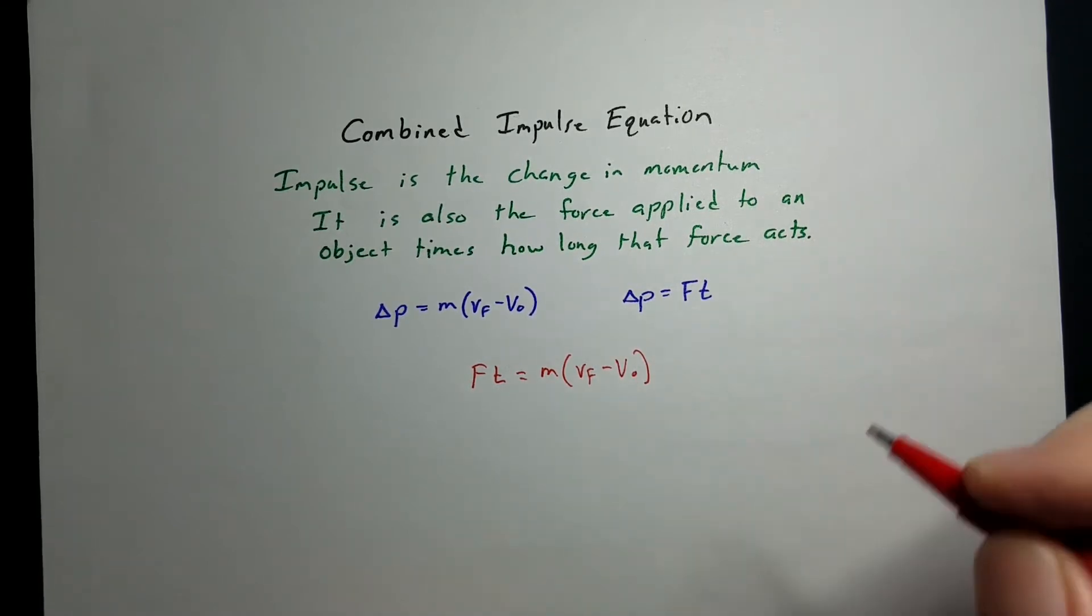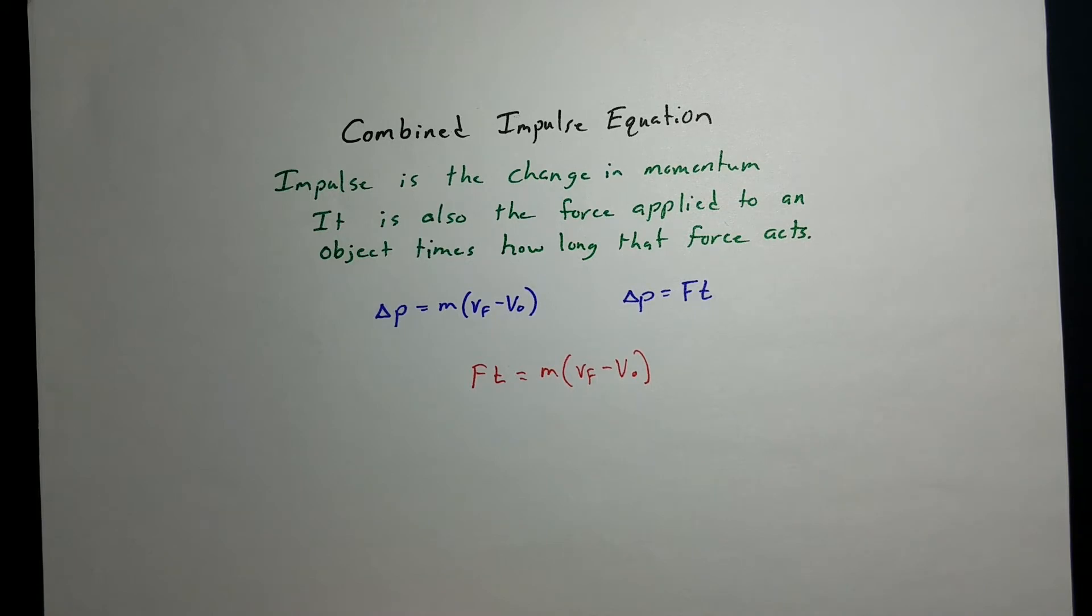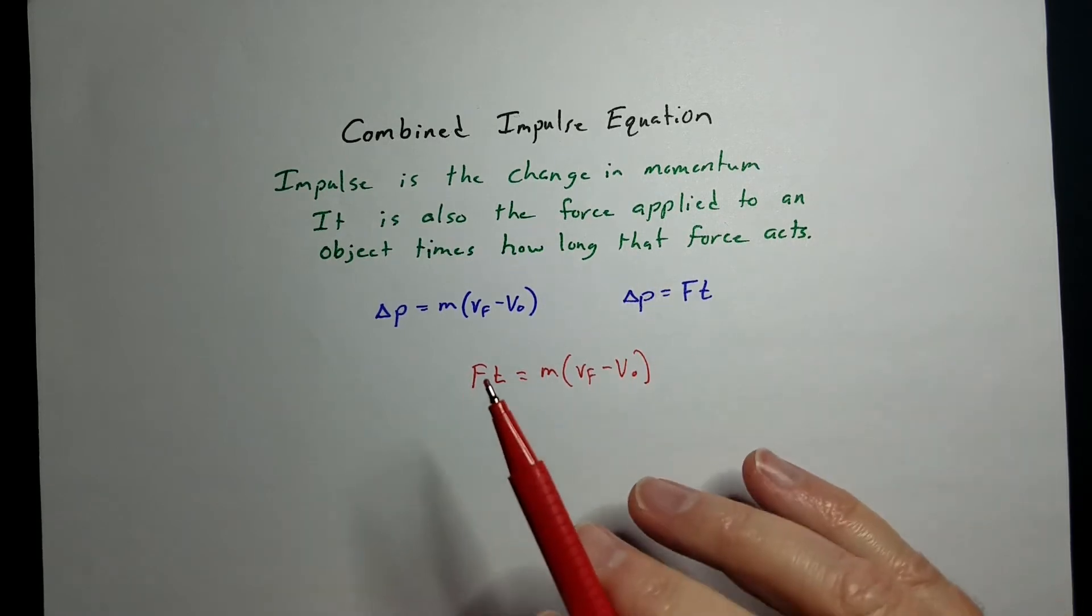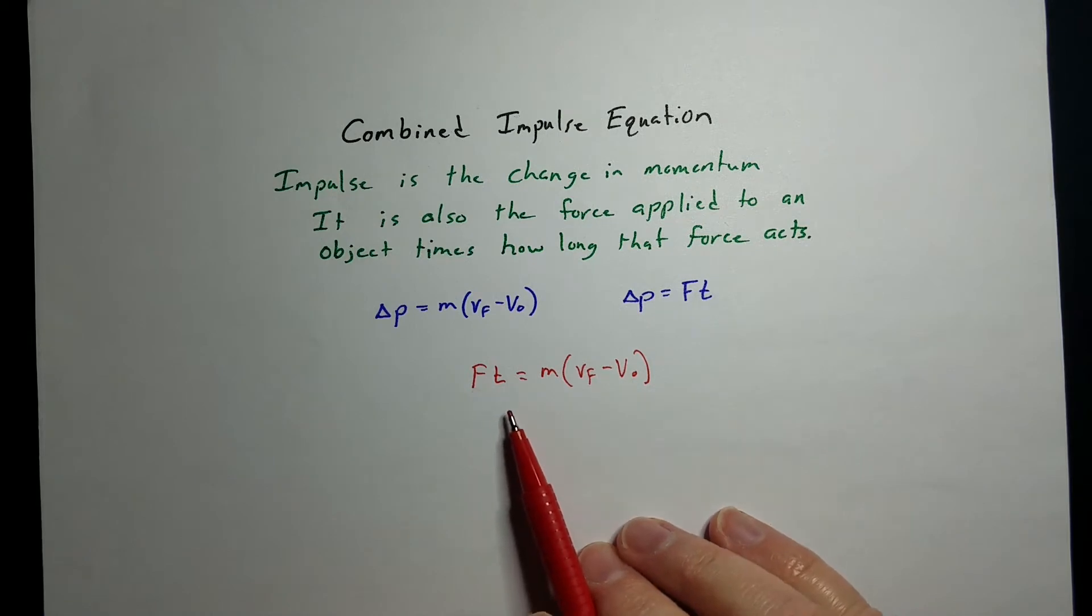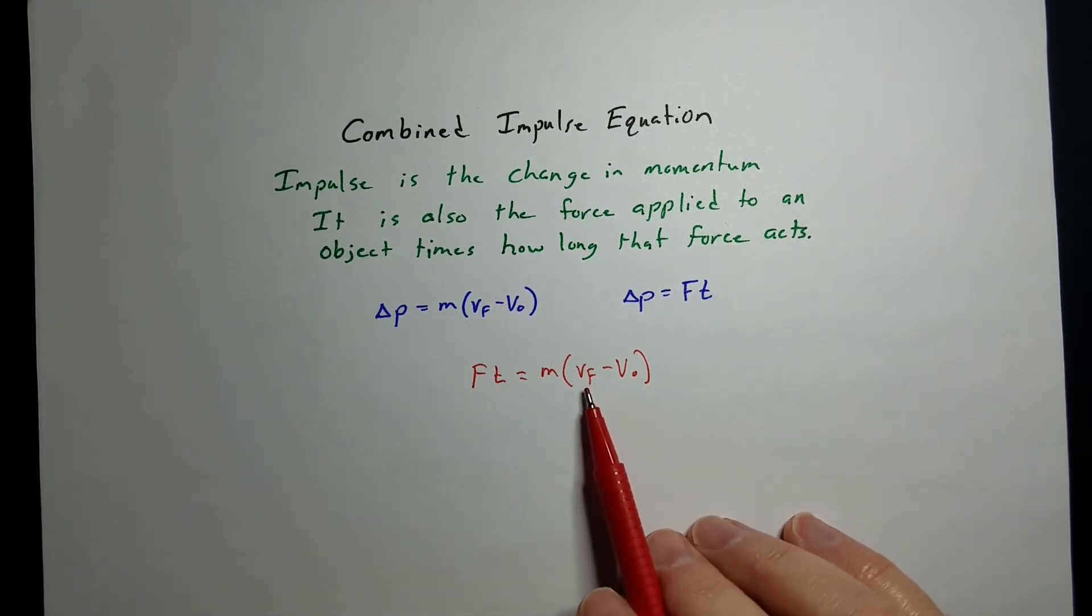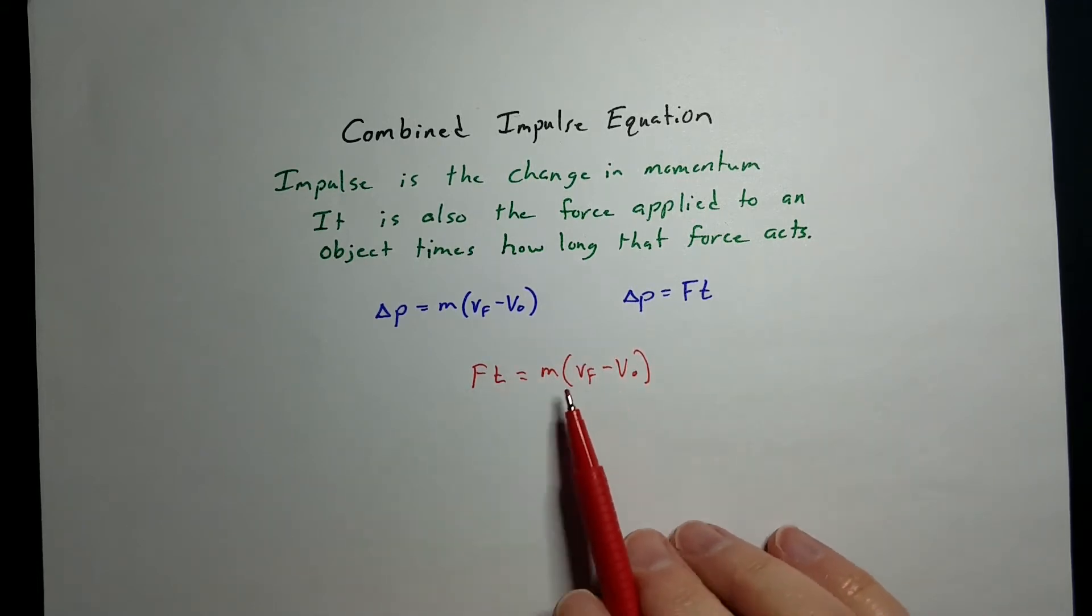Ft equals MVf minus V0. And where would you use this? I would use it any time that you have a question, but you're not asked for momentum or impulse. You're asked for something else, like the force that was applied, or how long did that force act, or what was the final velocity of the object after this impulse happened to it.